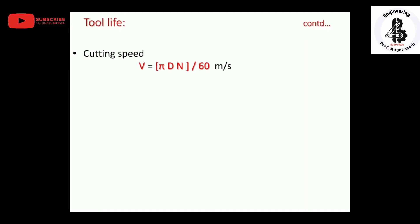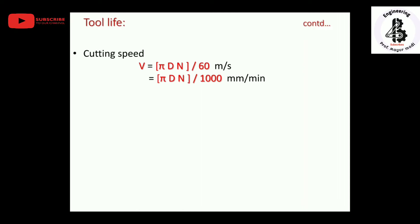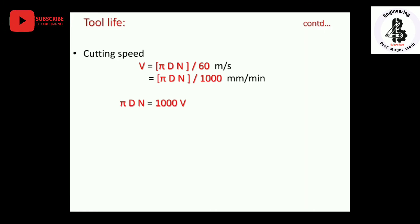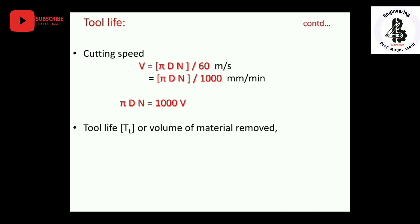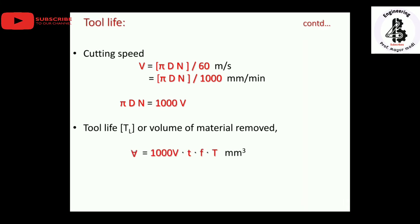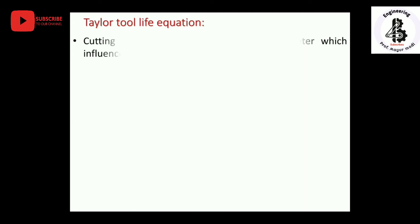For the cutting speed: V = π·D·N / 60 (meters per second) or π·D·N / 1000 (mm per minute), so π·D·N = 1000·V. Therefore the volume of material removed becomes 1000·V·t·f·T (mm³).